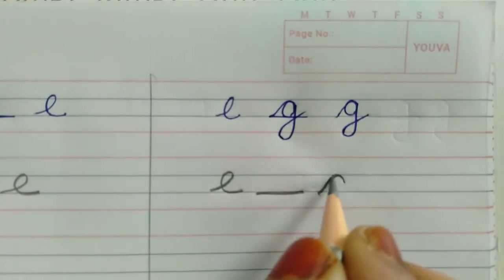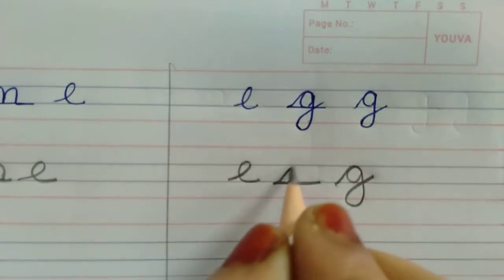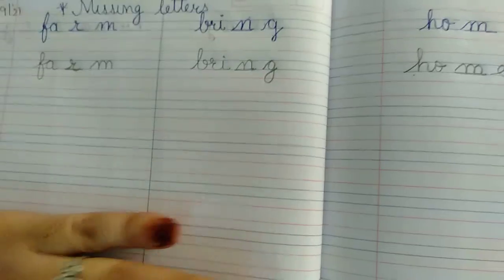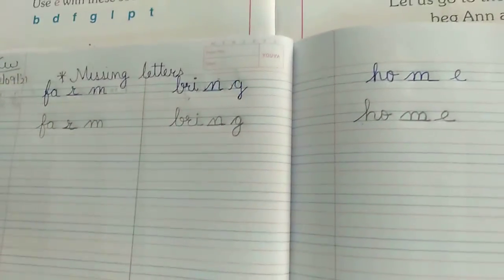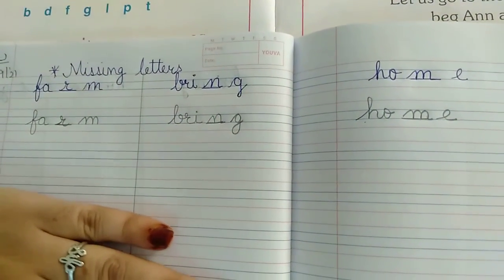E-blank-G. E-double-G. Egg. Is tarah se bol bol kar aapko yeh 4 missing letters complete karne hai pehle classwork mein. Uske baad aapko homework CMS classwork karna hai but first classwork mein bol bol kar likhne hai. Thank you.